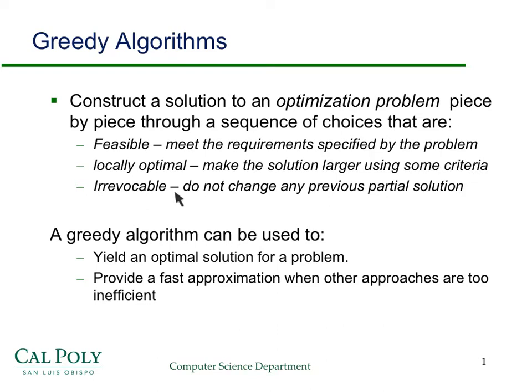And finally, it's irrevocable. This is probably, in some sense, the key one. You're not allowed to go back and change any previous partial solutions. You can't go back and revisit things that you've already done.